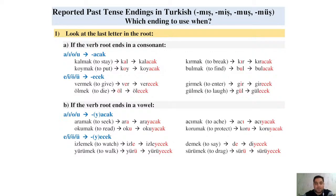So this is basically the rule. We have just two variations: whether the verb root ends in a consonant or a vowel. For a, ı, o, u it will be -acak or -yacak. For e, i, ö, ü it will be -ecek or -yecek, depending on the last letter in the root of the verb.